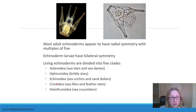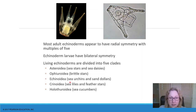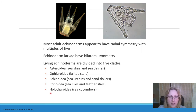The living echinoderms are divided into five groups. The Asteroidea — the sea stars, with the word 'aster' meaning star. The Ophiuroidea — the brittle stars. The Echinoidea — the sea urchins and sand dollars, with 'echino' meaning spiny. The Crinoidea — the sea lilies and feather stars, which are really unusual. And the Holothuroidea — the sea cucumbers. The sea cucumbers are the only ones that don't have mostly five-part radial symmetry as adults; they keep their bilateral symmetry.